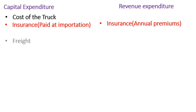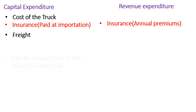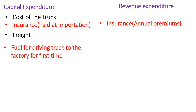The freight cost — the cost of shipping the truck while it was on sea — is capital expenditure, because it was a cost incurred in getting that fixed asset into my business. Similarly, the transport cost when the truck reached the port in Mombasa and needed to be driven inland to my factory in Uganda is also capital expenditure. That cost is tagged to the overall cost of the truck.